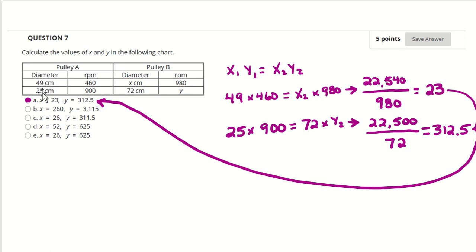Now the bottom one here, 25 times 900. 72 times the unknown. 22,500 divided by 72 comes out to 312.5. Here's our answer right here, x equals 23, y equals 312.5.